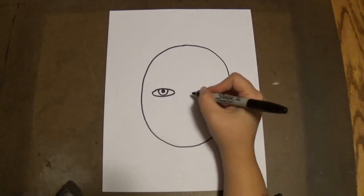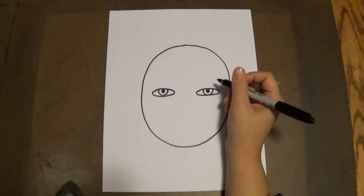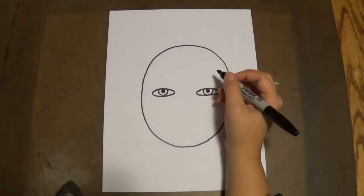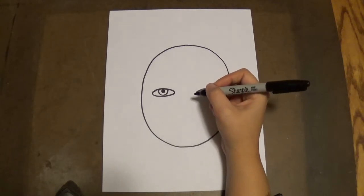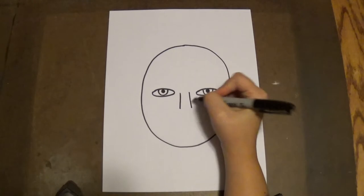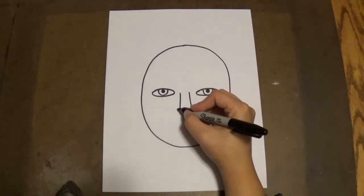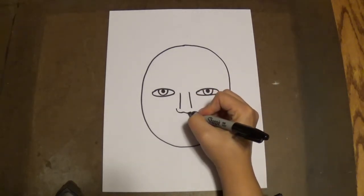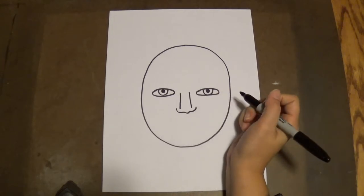And we're going to make our nose. So there are lots of ways to make noses. Today we're going to make it like this. We're going to draw a line down and a line down. And then we're going to draw a line across the bottom. It's kind of a squiggly line like that.